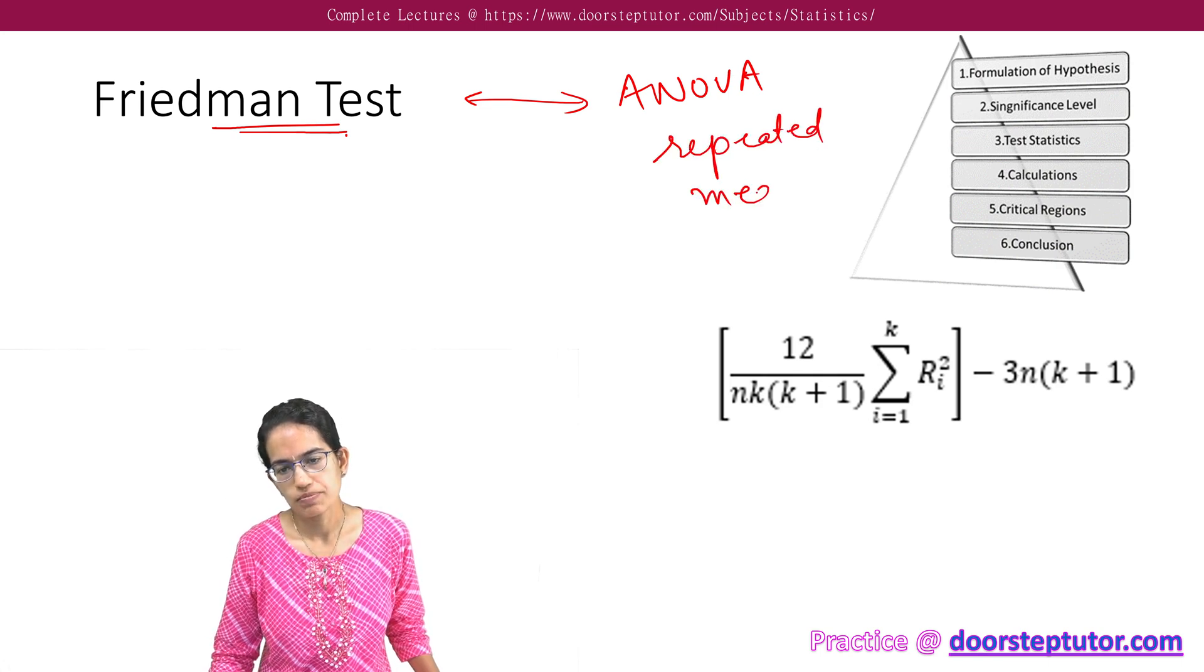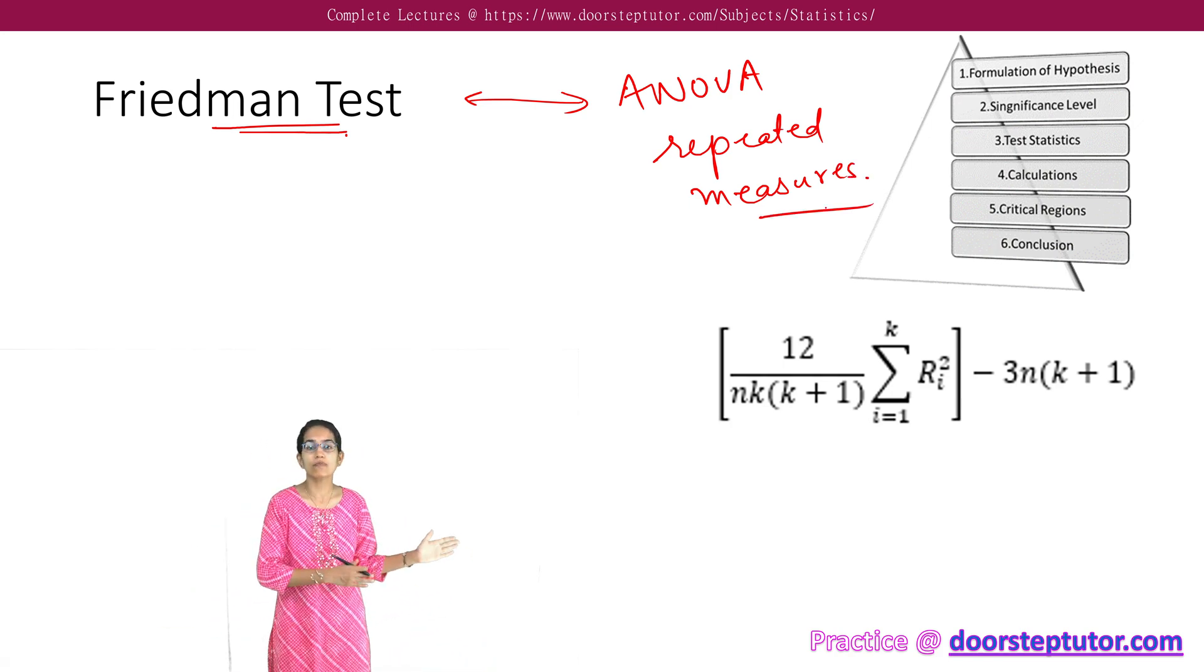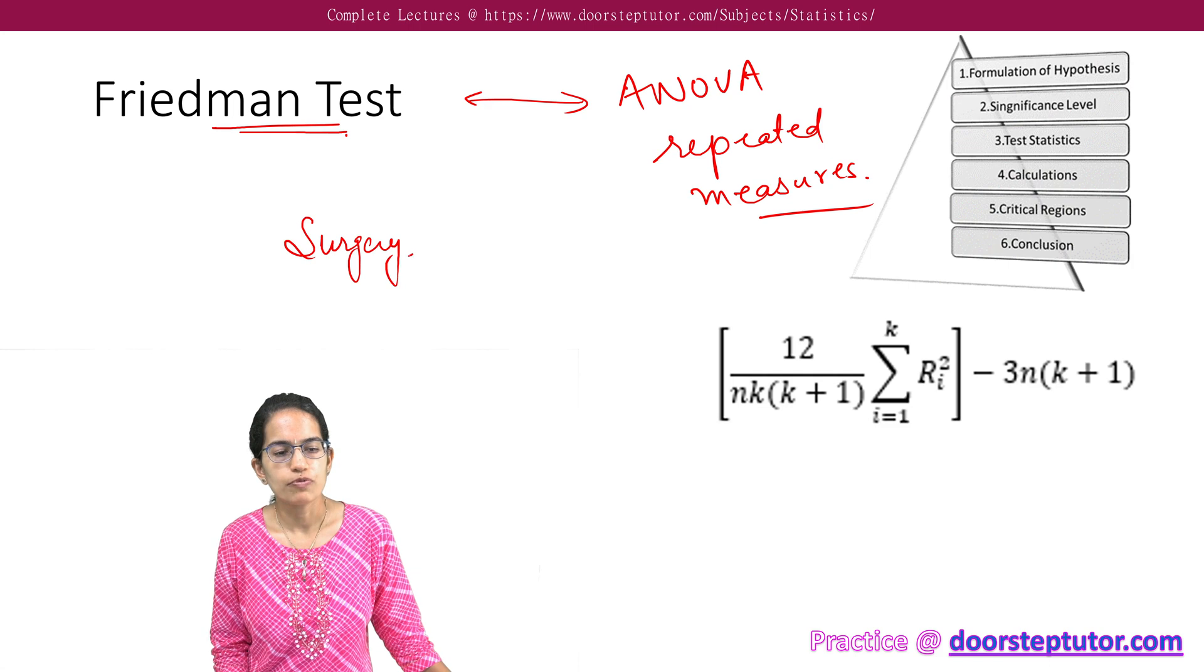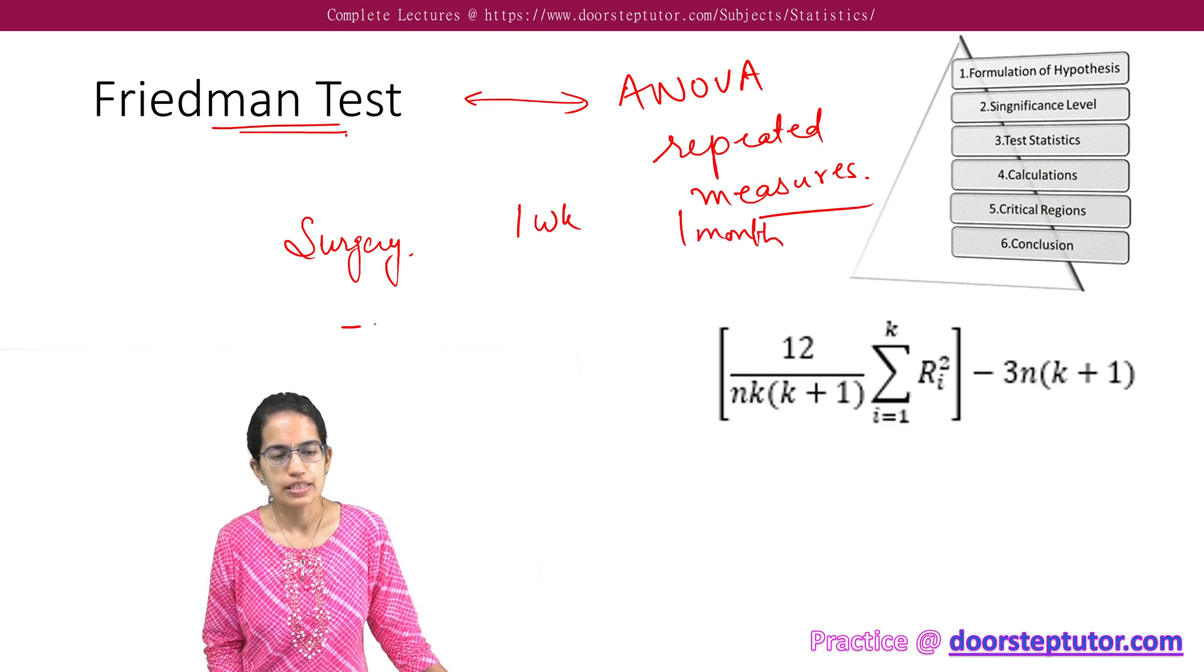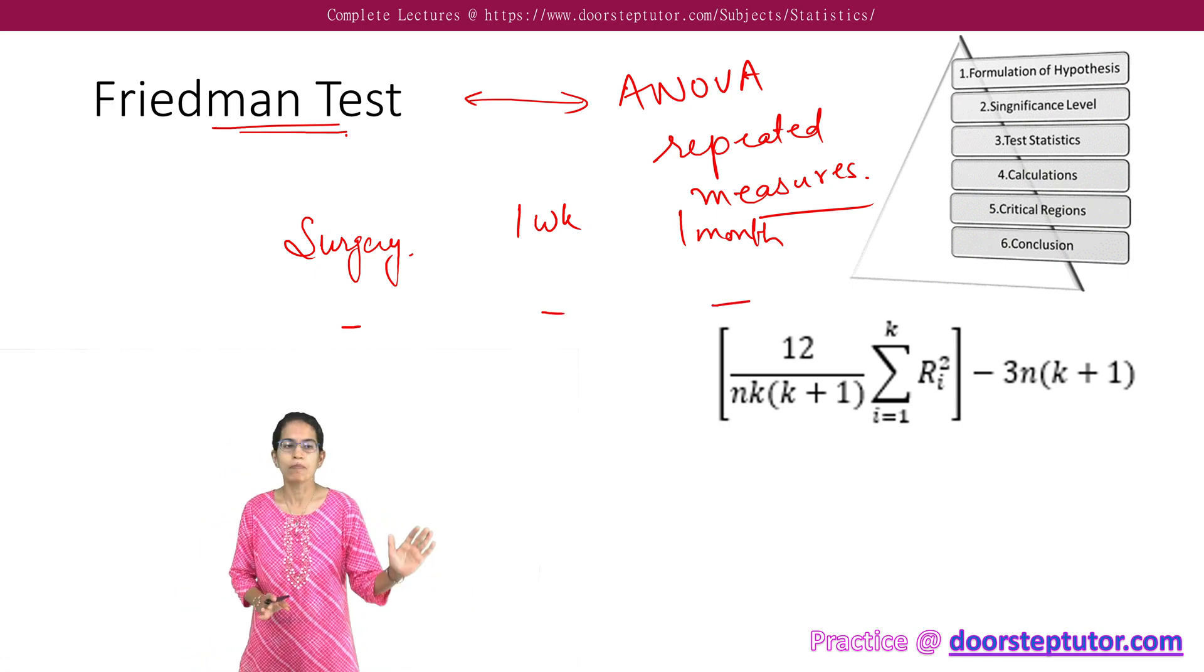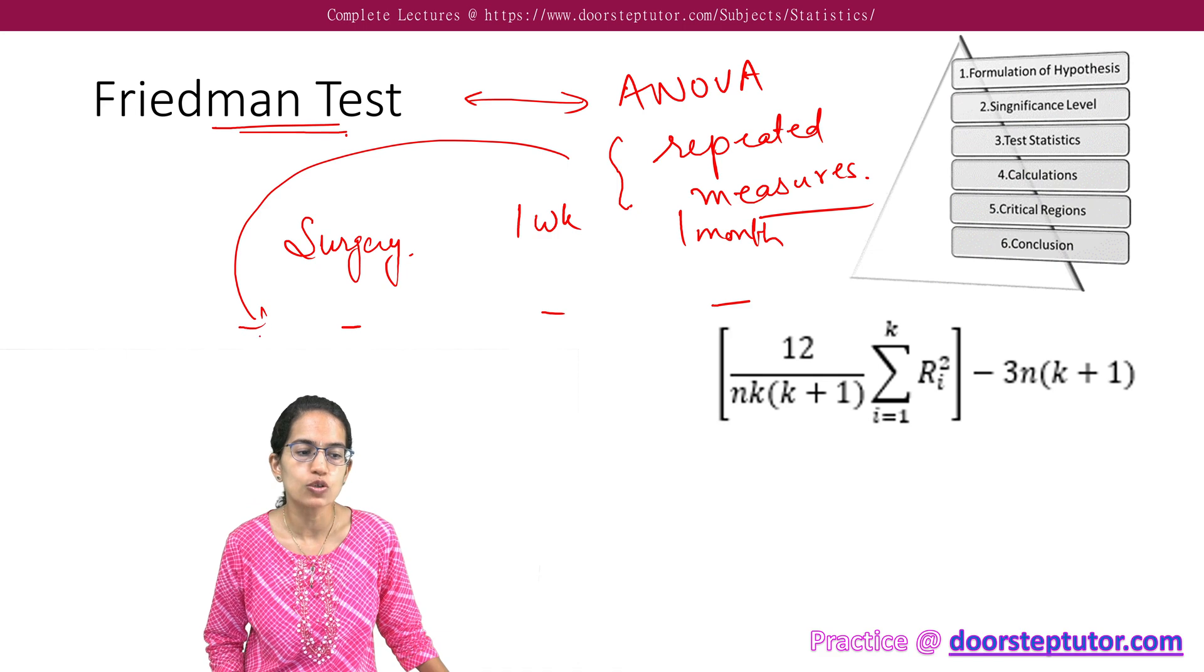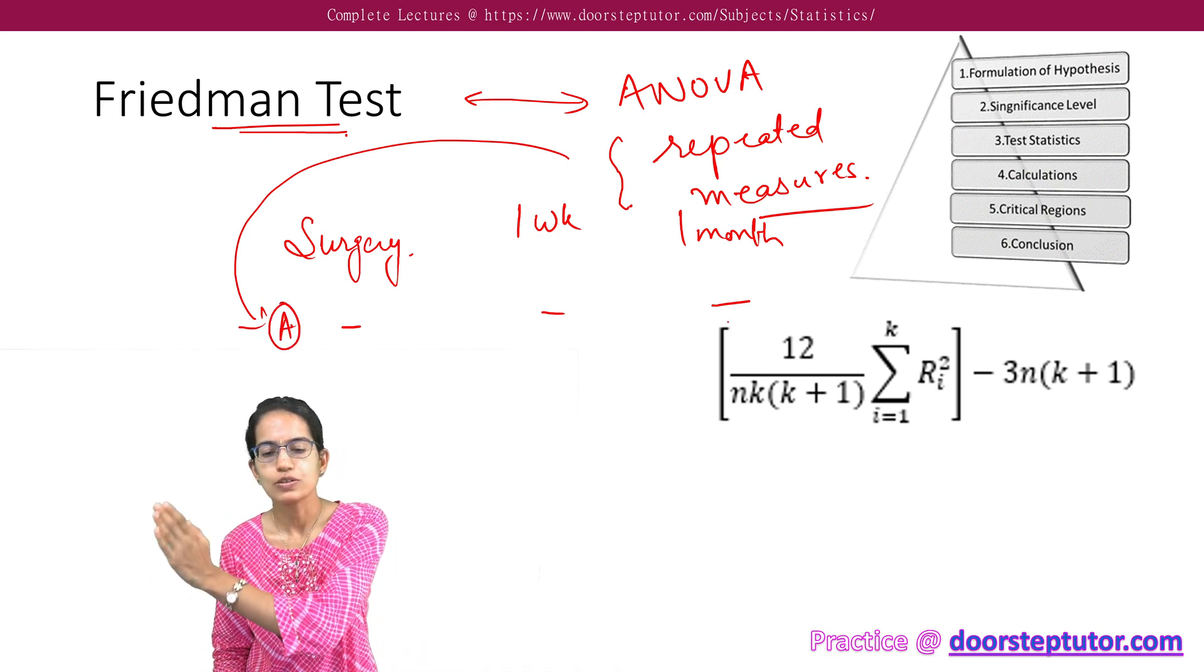Repeated measure means on the same person you are studying the test at different points in time. Let's say a person underwent a surgery. After the surgery, you are following up with the patient one week later and one month later. So I'm having three points of time on which I'm studying the same person. And that is where you would use the Friedman test because it is repeated measure. Why is it repeated? It is on the same person A that I am taking the values at three points of time.